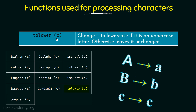Next we have TOLOWER. Until now we have been dealing with functions that return true or false — checking for something. But here we are actually converting the character to something different. TOLOWER changes C to a lowercase character if it is an uppercase letter, otherwise it leaves it unchanged. For example, uppercase A would be converted to lowercase a, uppercase B to lowercase b, and if it is already lowercase it stays unchanged.